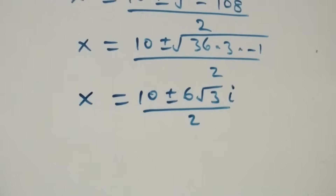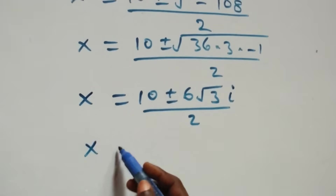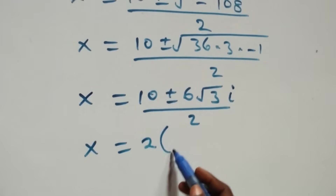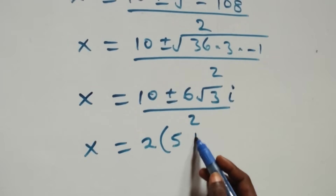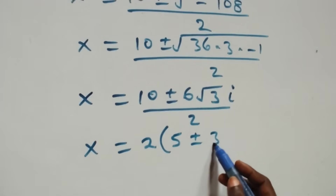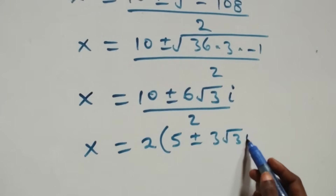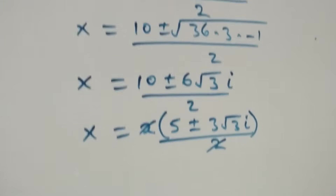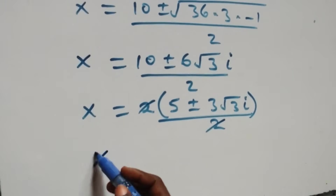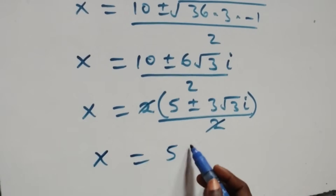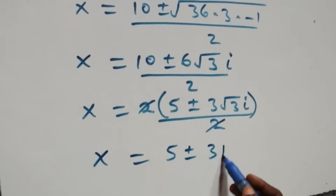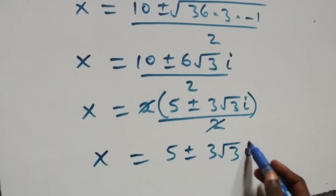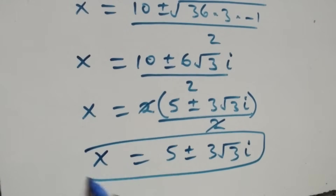Here 2 is common, so we have x equals to 2 into brackets, 5 plus or minus 3 root 3i, over 2. The 2s cancel each other, and this becomes x equals to 5 plus or minus 3 root 3i. So here we have 2 complex solutions.